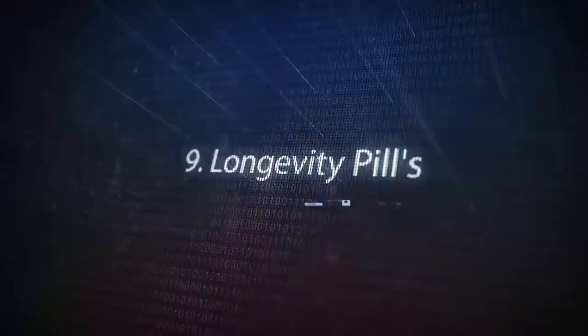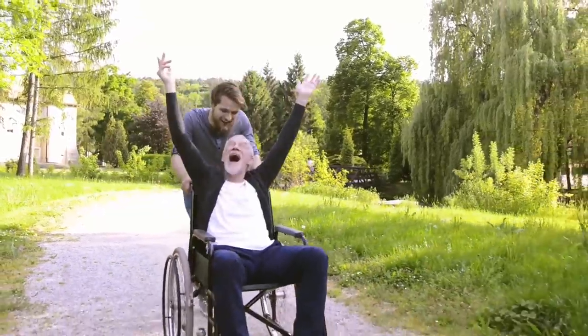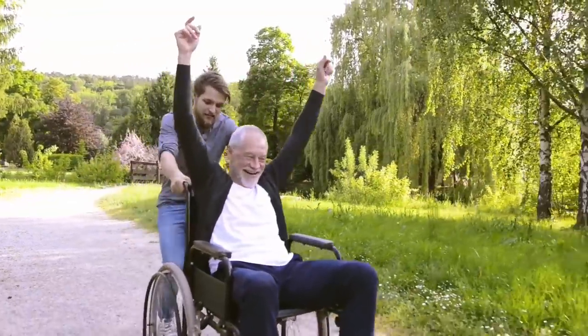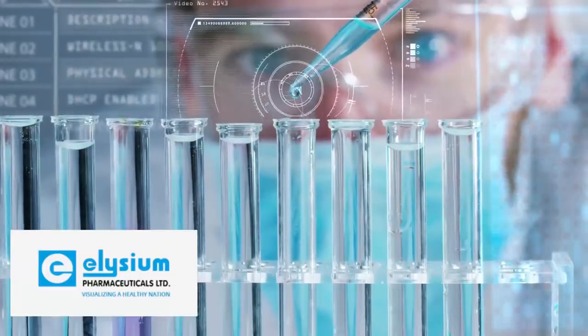Number 9: Longevity pills. A pill that triggers the anti-aging enzyme sirtuin 1 could, it is estimated, extend the human lifespan by as much as 15%. One example has been developed by a startup pharmaceutical company called Elysium, whose basis NAD+ supplement is thought to slow down the aging process.